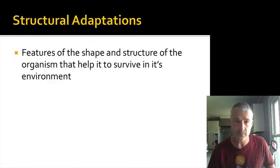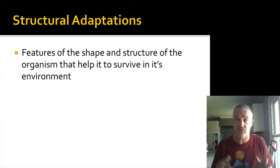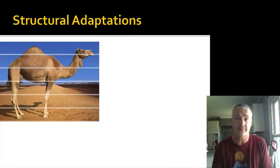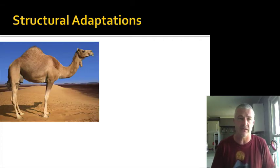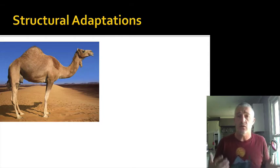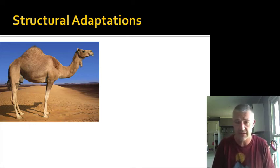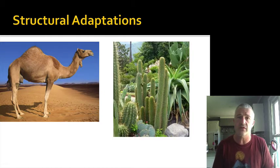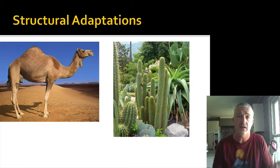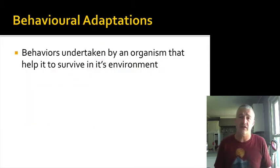Structural adaptations are changes in shape, structure, or look of a particular organism to help it respond to its environment. Examples include the camel and its ability to store nutrients as fat in its hump to go a long time without needing nutrients and being water-efficient. Cactuses also have structural adaptations that allow them to survive in their environments, including spines that protect them from other organisms.